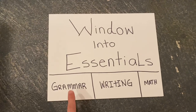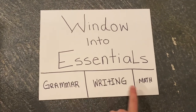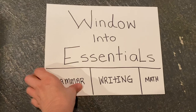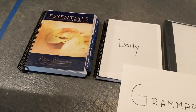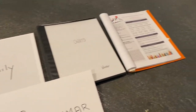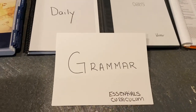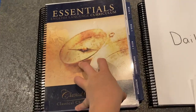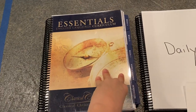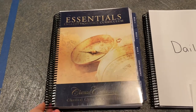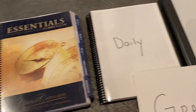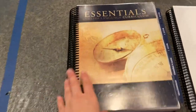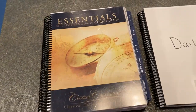The Essentials program is broken up into three sections. We're going to talk about the grammar portion first — this is the grammar strand. When you order your Essentials guide, it's going to come in the mail loose leaf and you will need to either have it bound or stick it in a three-ring binder. Either one is fine; I prefer the spiral binding because it's easier for me to hold on my lap.